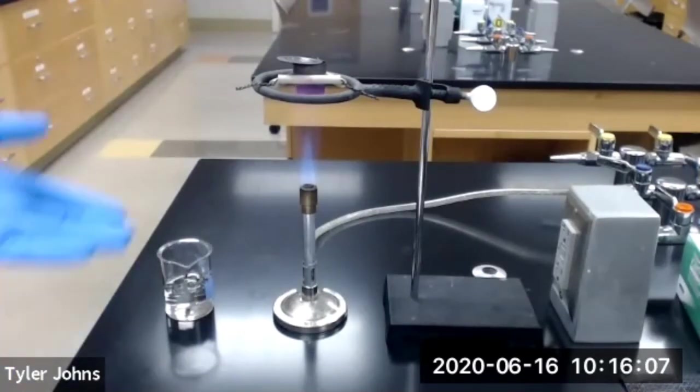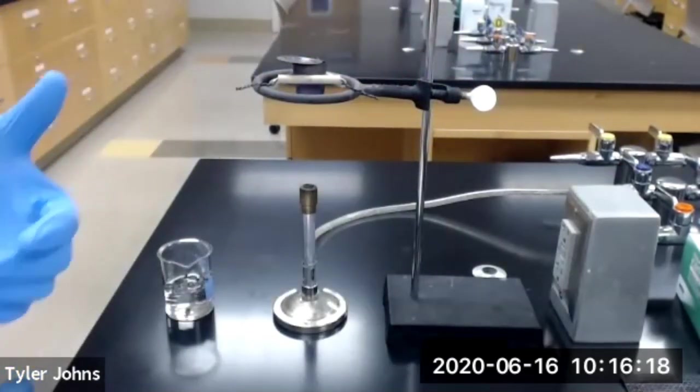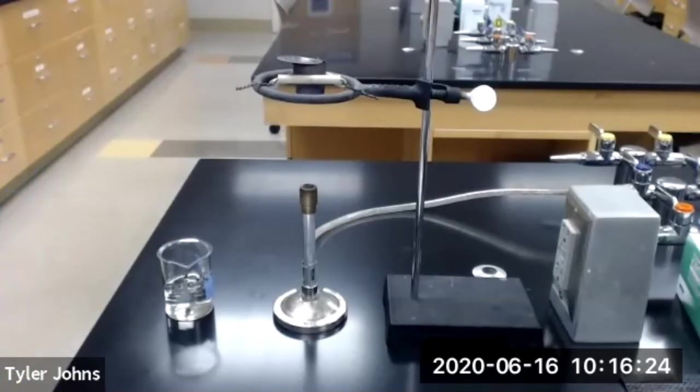Okay, so we've been heating on high heat our crucible for about ten minutes. So we're going to go ahead and turn off the Bunsen burner. We're going to allow our crucible to cool for about five minutes. And after that five minutes, we're going to weigh it. And we're going to repeat this heating and cooling process until we have a constant mass within 0.0005 grams.